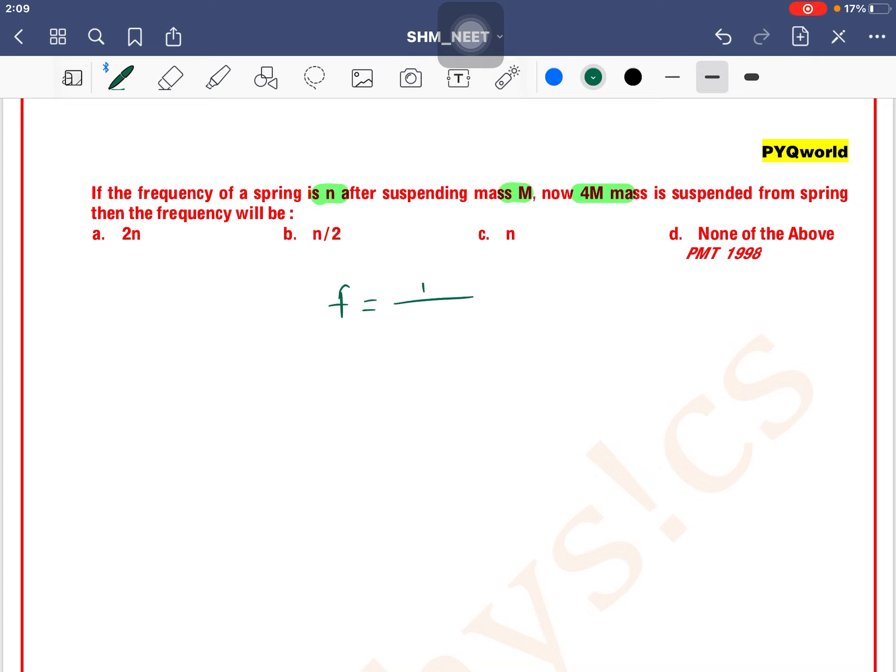1 by 2π under root of k by m, where k is the spring constant. Here the spring is the same, so k is constant. Therefore, f is inversely proportional to the square root of mass, so we can